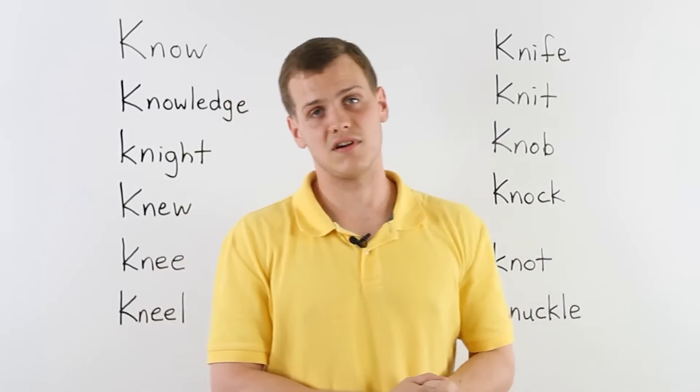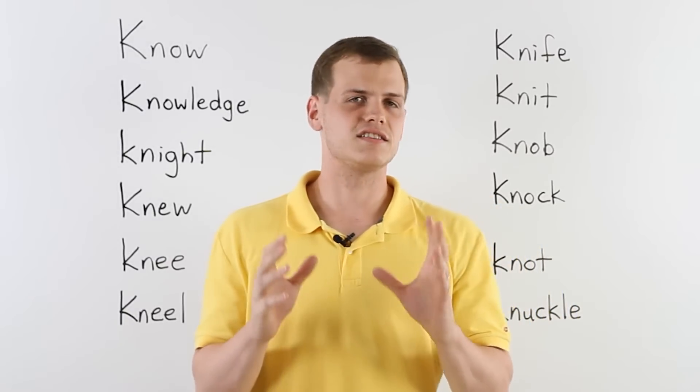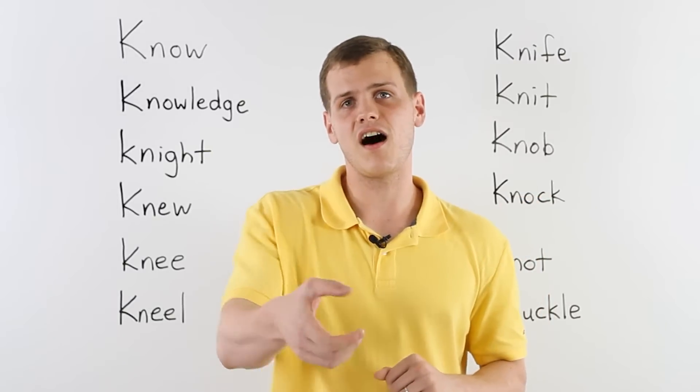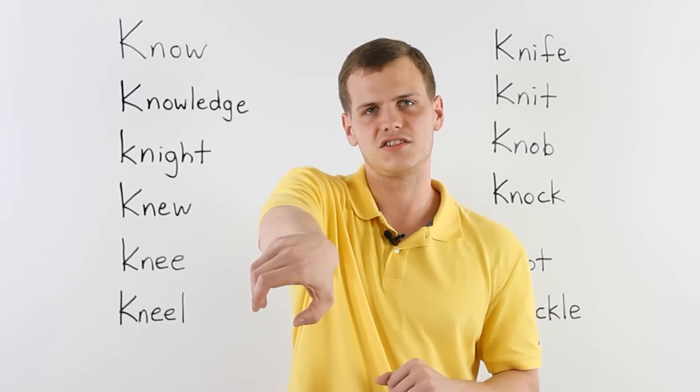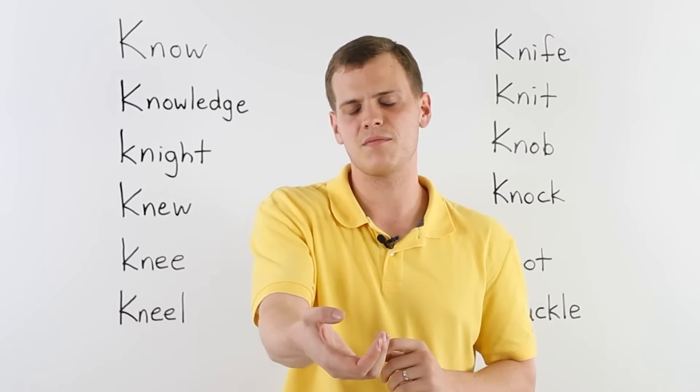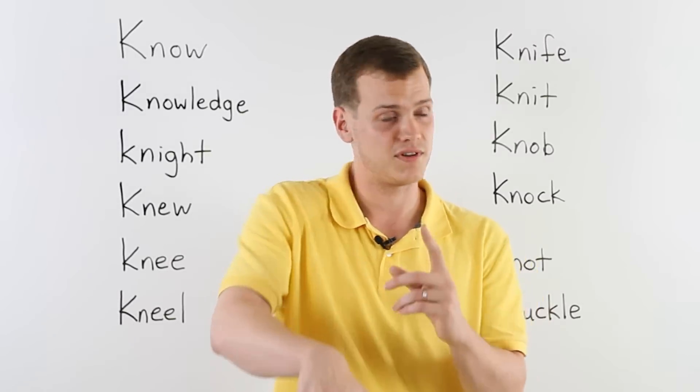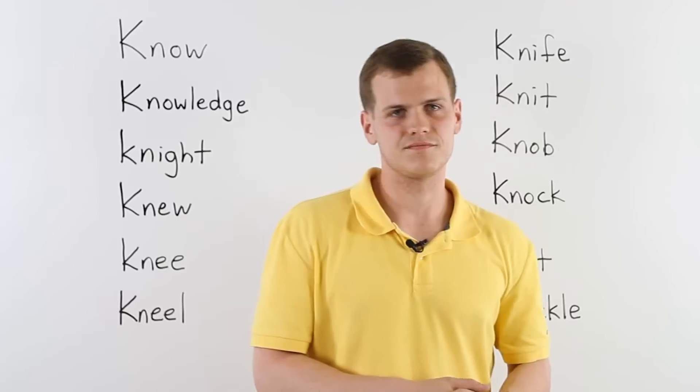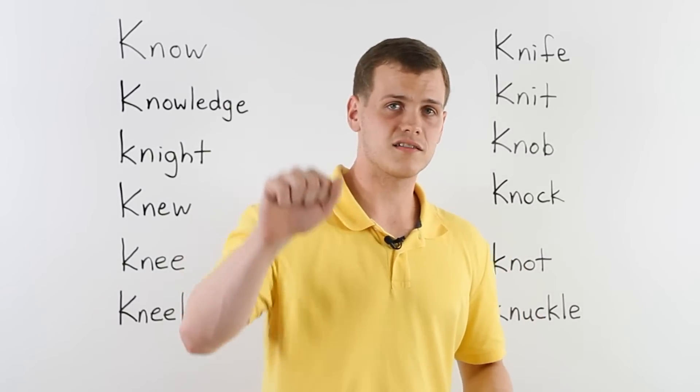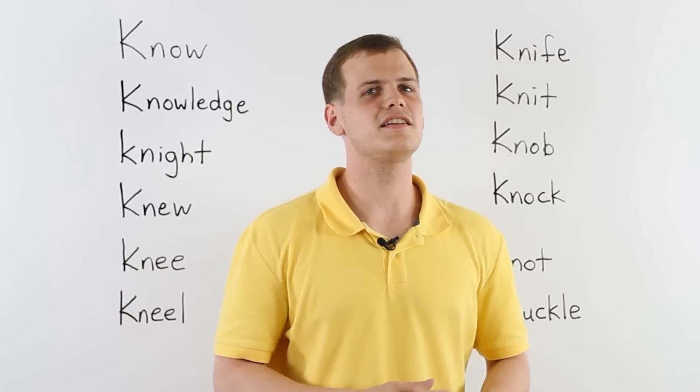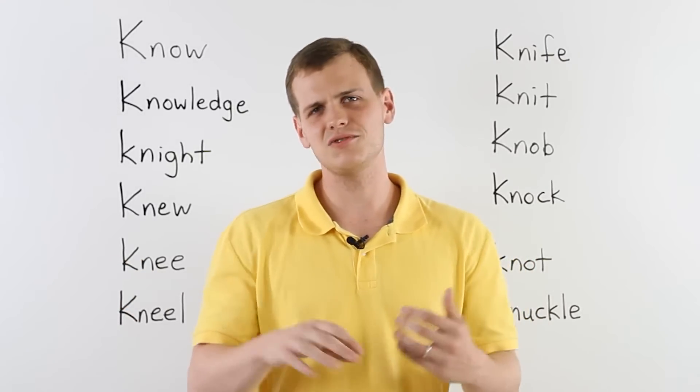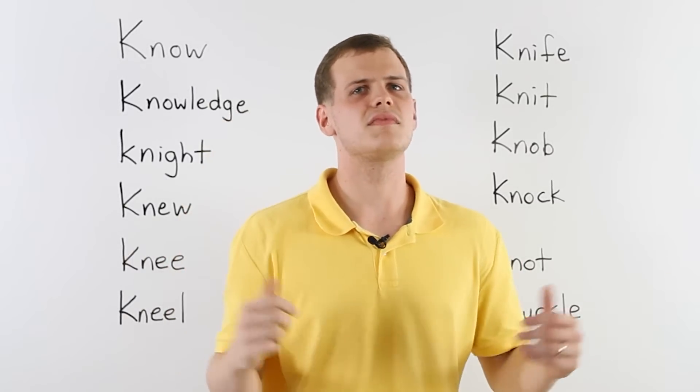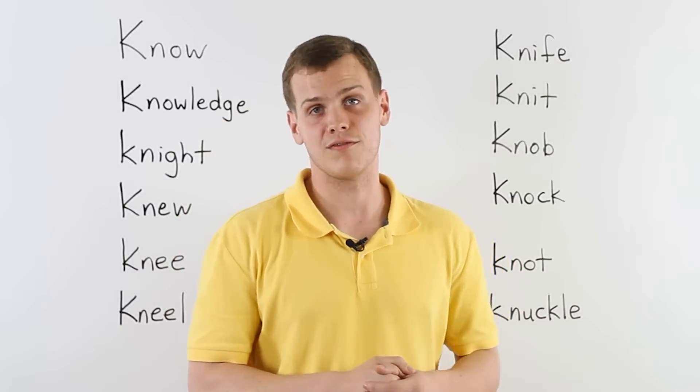Then there's knob. Knob is on some doors. Some doors have a handle, but some doors have a knob. And this is you grab it and just turn it. It's almost like a ball shape. Grab the knob, turn the knob. It's a good thing. Also for a door, you have knock. This is knock, knock. Anybody home? You're going to visit your friend. Don't just open the door. Well, maybe, but it's polite. Knock, knock. Then someone will come and open the door for you.